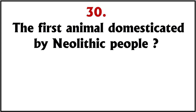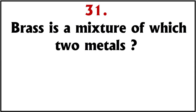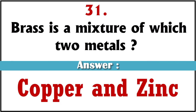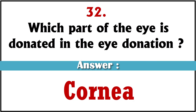The first animal domesticated by Neolithic people? Dog. Brass is a mixture of which two metals? Copper and zinc. Which part of the eye is donated in eye donation? Cornea.